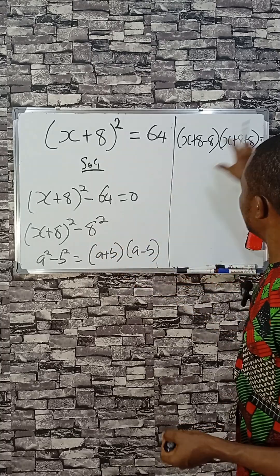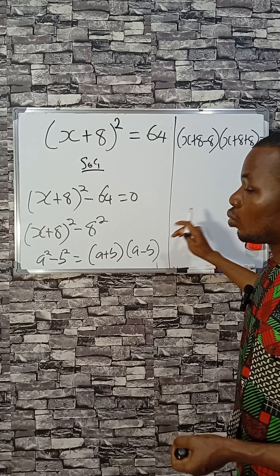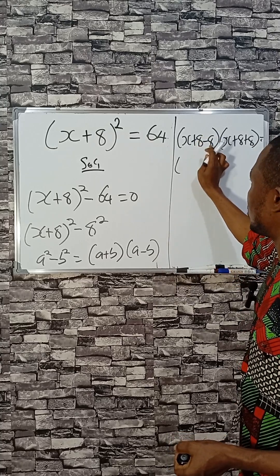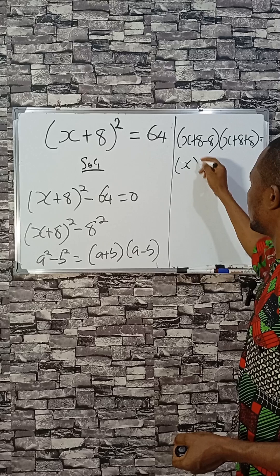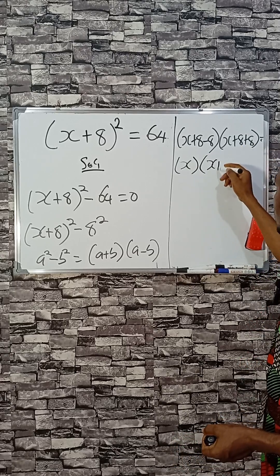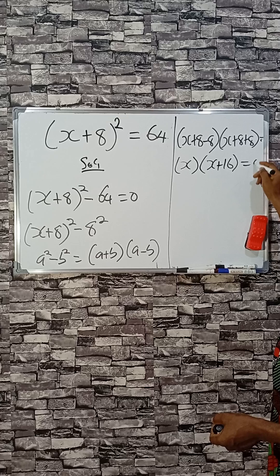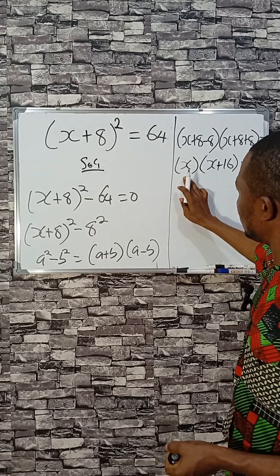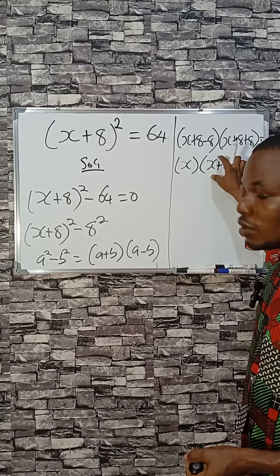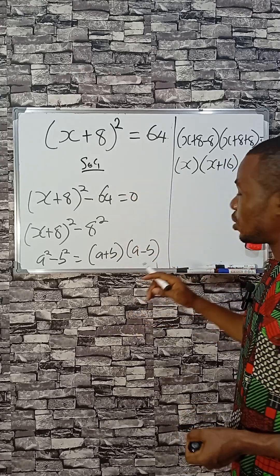So if I should solve this, 8 minus 8 is zero, we have X here. 8 plus 8 is 16 equal to zero. If you solve this out, it means this equals zero or this is zero or both of them are equal to zero.